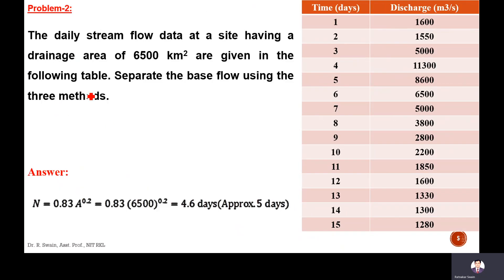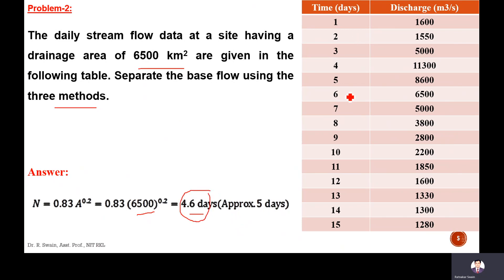Moving to the next problem: daily stream flow data at a site with a drainage area of 6500 km² is given. We need to separate the base flow using three methods. N is calculated as 0.83 × A^0.2 with A = 6500, giving N = 4.6 days, which we approximate as 5 days since the data is in days.